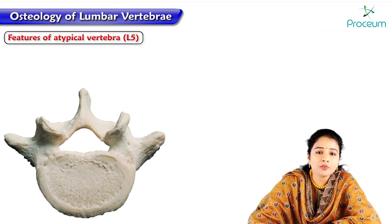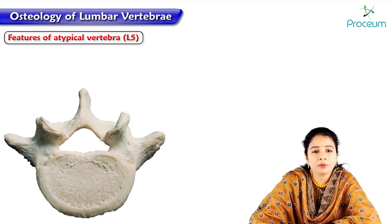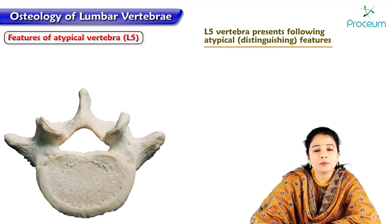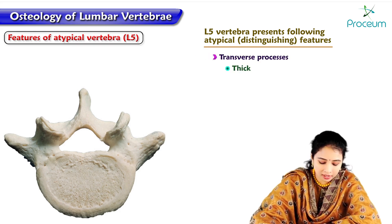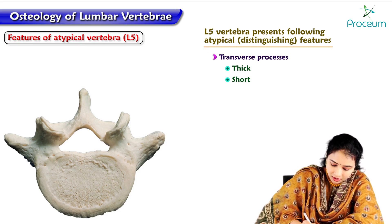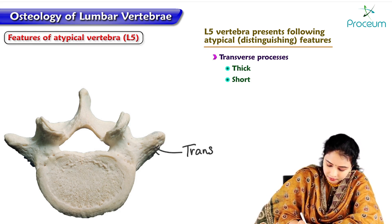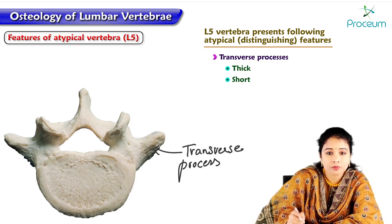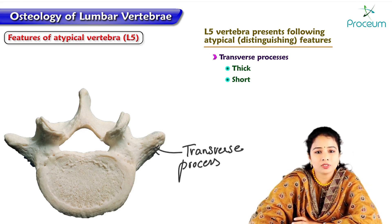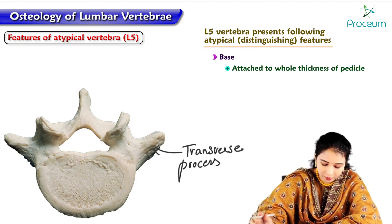The features of the atypical fifth lumbar vertebra, L5: the transverse processes are thick and shorter, and they are almost pyramidal in shape, with their base attached to the whole thickness of the pedicle.